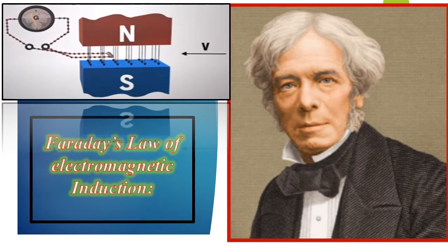Michael Faraday was an English scientist. In 1822, he wrote a goal in his notebook — to convert magnetism into electricity. Later, after almost 10 years, he succeeded in converting his dream into reality. Faraday observed that if a conductor could move in a magnetic field, and if the conductor was in the form of a closed loop, then the conductor could act as a current generator.